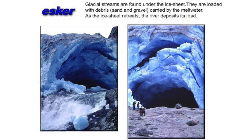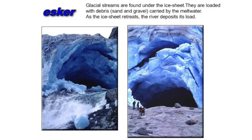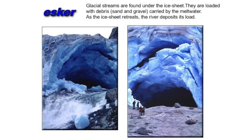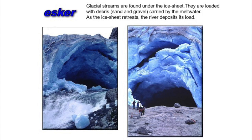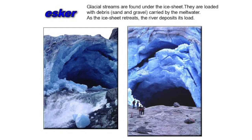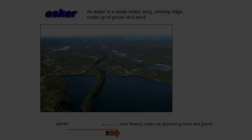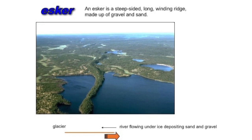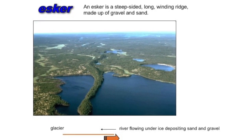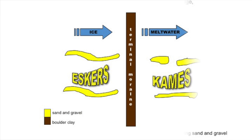Any material carried by the subglacial river would eventually be dropped when the meltwater no longer had enough power to carry it. When the glacier retreats, these deposited linear shapes remain, and you can see here there's a long thin linear shape in the middle of the screen.